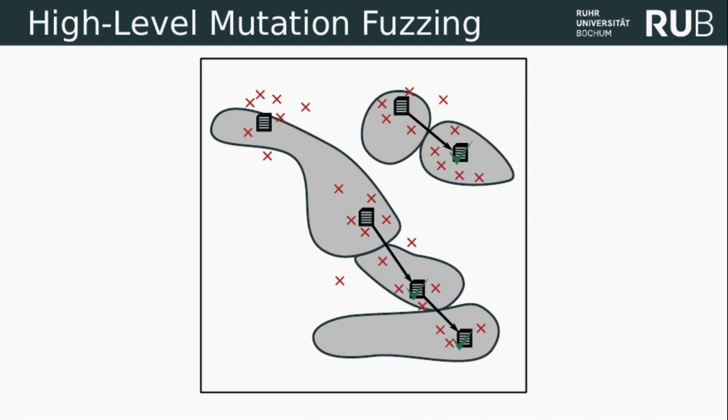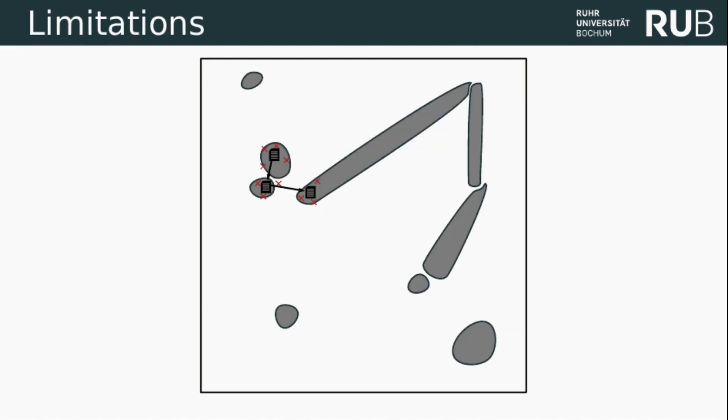If the interesting areas in the input space are close together with respect to the mutations and small enough such that inputs in one area are likely to create mutations in another area, then the fuzzer usually works very well. However, due to general undecidability, this is not always the case. In many cases, some of the equivalence classes are too large for the fuzzer to explore sufficiently. In such a case, the mutation engine is not able to generate mutations that reach far enough.